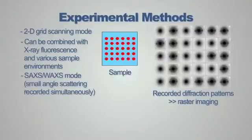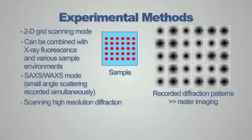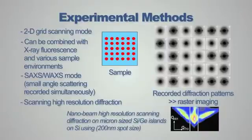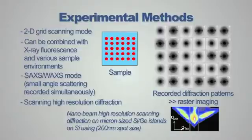Small and wide angle scattering can be recorded simultaneously on one and the same diffraction pattern, which is very useful for polymer research. The option to have high resolution diffraction is very interesting for semiconductor research, because you can resolve structures within Bragg reflections and therefore determine the strain and domain arrangement of small objects on semiconductor surfaces. On the lower right you can see an example of such a reflection recorded with a 200 nm beam on a silicon germanium island.